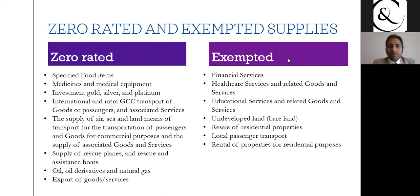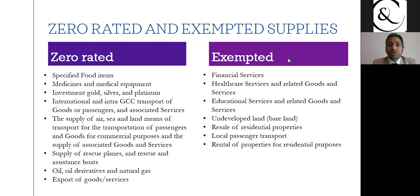For example, if you have a supply which is exempted and it costs 100 rials, the invoice will be 100 rials only. The same applies for a zero-rated invoice at 100 rials — the sale invoice will also be 100 rials. But there is a huge difference in terms of the implications, which I will explain in subsequent slides.